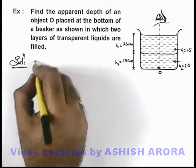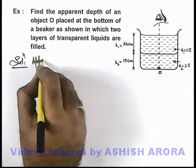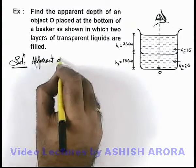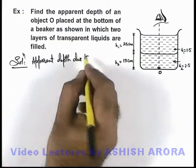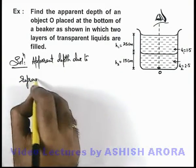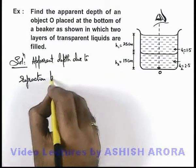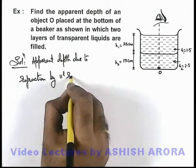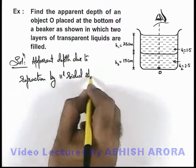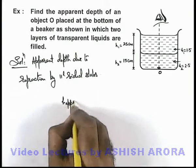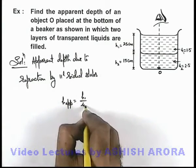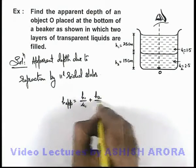In previous sections, we already discussed that apparent depth due to refraction by parallel-sided slabs can be given as h_apparent = h1/μ1 + h2/μ2, and so on.